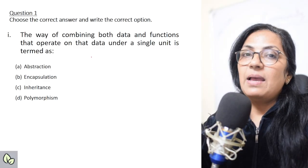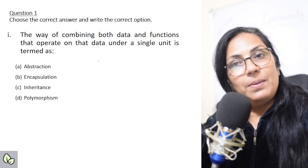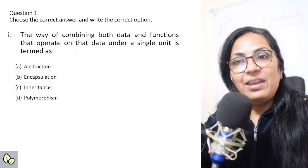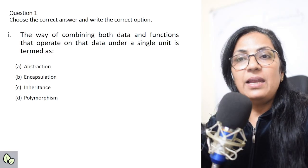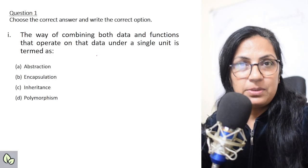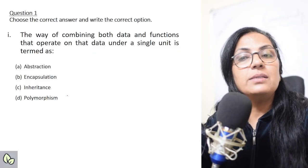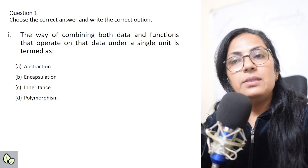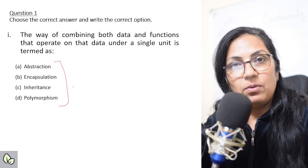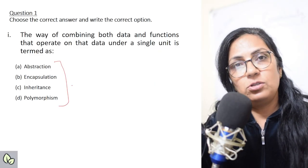In question number 1 of your board examination, there will be 20 MCQ parts. Our first question: 'The way of combining both data and functions that operate on that data under a single unit is termed as —' and the options are: abstraction, encapsulation, inheritance, and polymorphism. Children, these four are principles of object-oriented programming language, and I suppose all of you know their definitions.